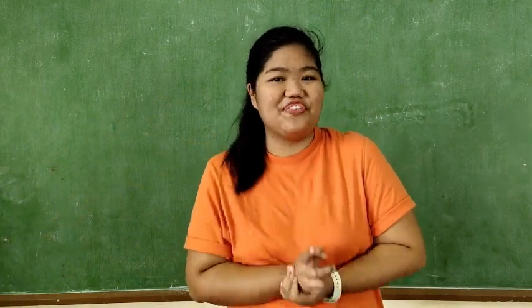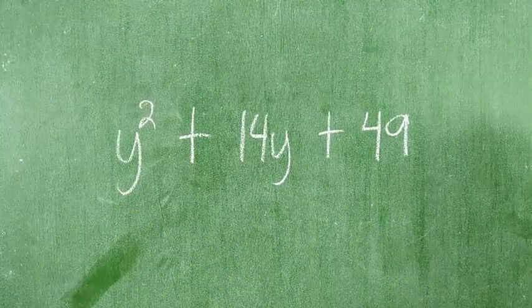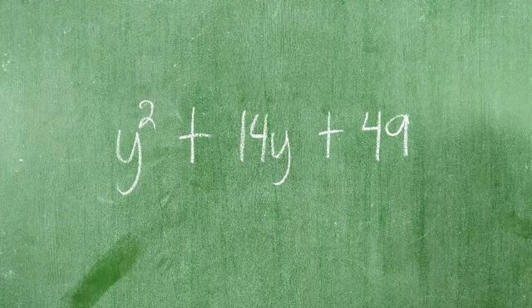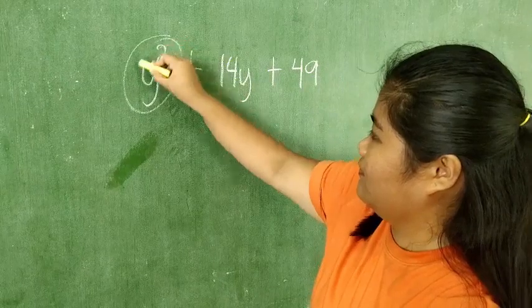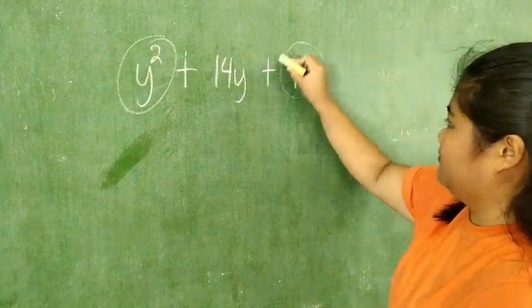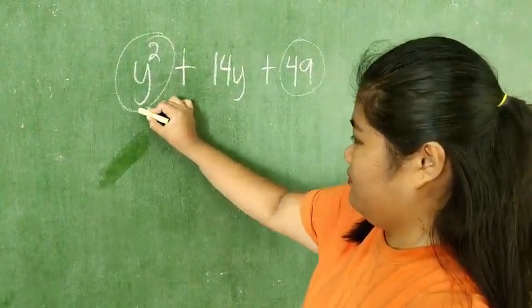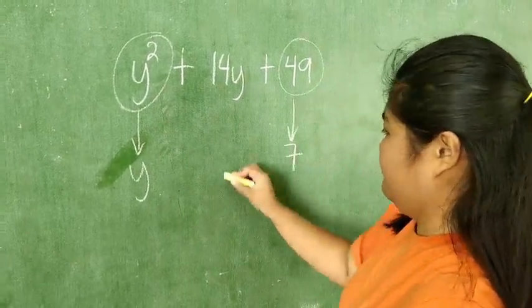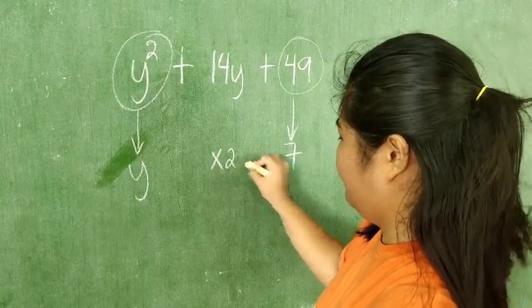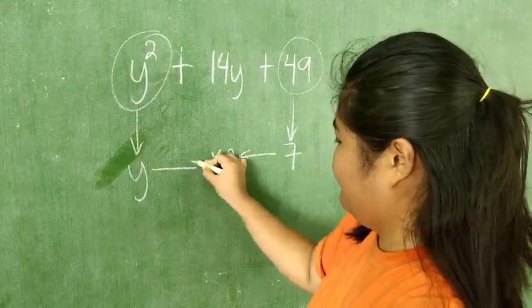Is the first example clear enough? If not, let's try figuring out another one. Is y squared plus 14y plus 49 a perfect square trinomial? If your answer is yes, then you are correct. The first term y squared and last term 49 are both perfect squares. The square root of y squared is y. The square root of 49 is 7. Twice the product of 7 and y is equal to the middle term 14y.